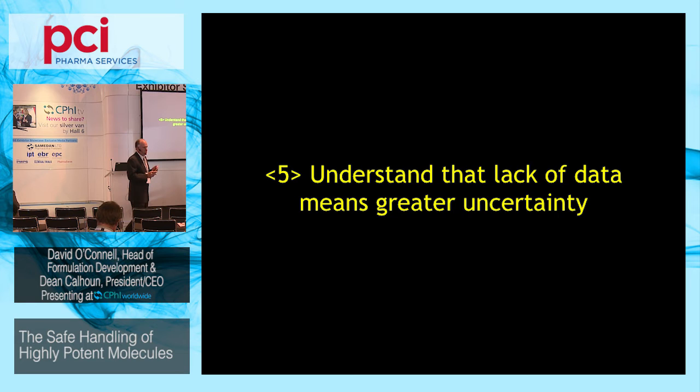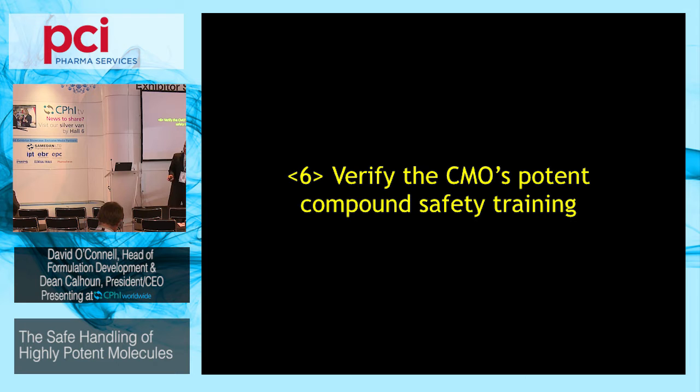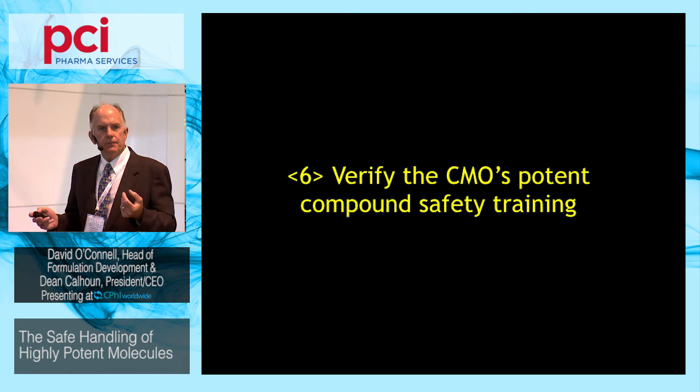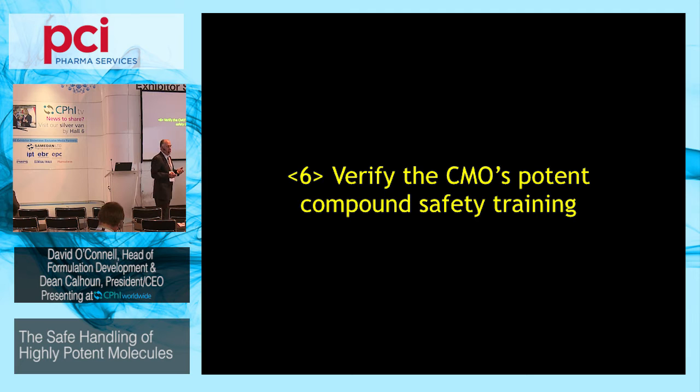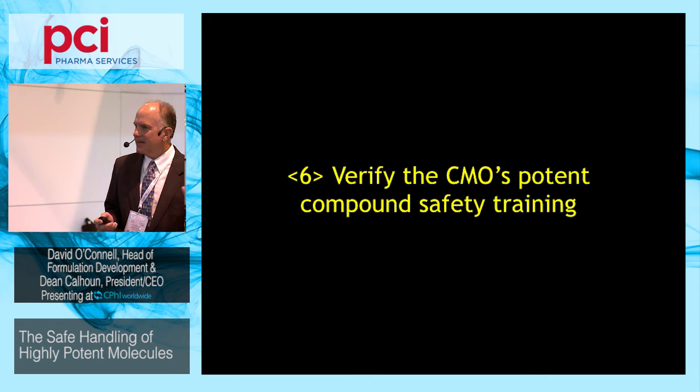The sixth point: verify that the CMO has valid potent compound safety training. This may require that you actually go on site and not only look at the training documentation, but observe how the operators are actually working. I've been at facilities where operators have potent compound safety training, but I've observed them using air hoses to blow powder off the top of a container — not acceptable. Training is one thing; how they apply it is another. Make sure your CMO has potent compound safety training and that it's actually being implemented.